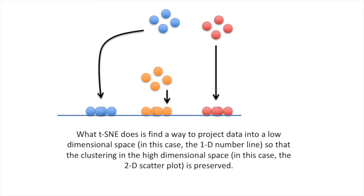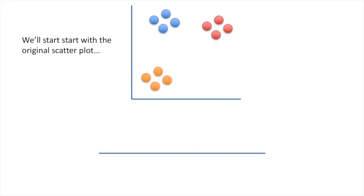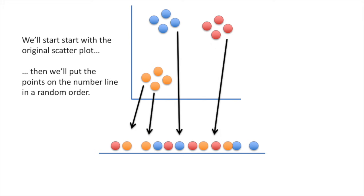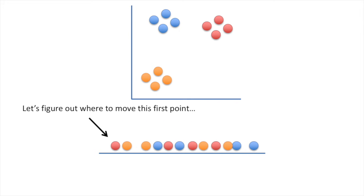What t-SNE does is find a way to project data into a low-dimensional space, in this case the one-dimensional number line, so that the clustering in the high-dimensional space, in this case the two-dimensional scatterplot, is preserved. So let's step through the basic ideas of how t-SNE does this. We'll start with the original scatterplot, then put the points on the number line in a random order. From here on out, t-SNE moves these points a little bit at a time until it has clustered them.